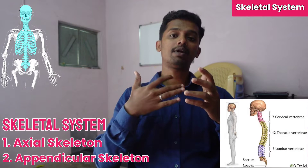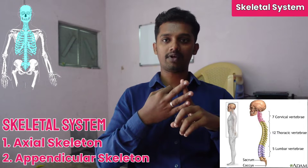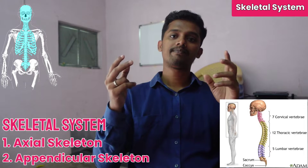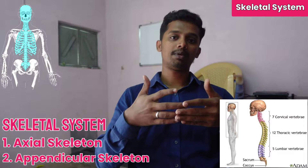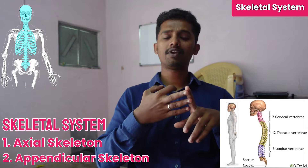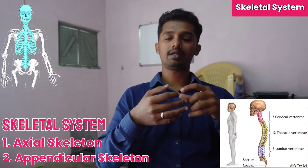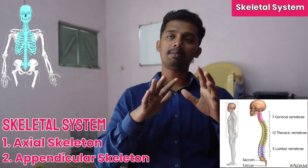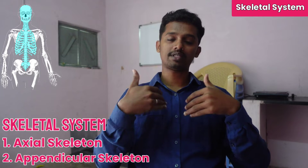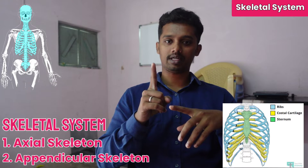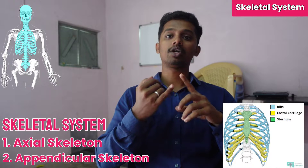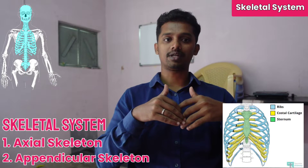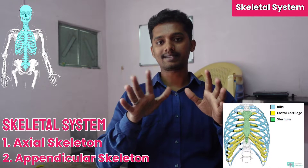Next, we have the vertebrae, which are divided into four regions: cervical vertebrae, thoracic vertebrae, lumbar vertebrae, and sacrum-coccyx (which are fused bones). The lumbar vertebrae are in the stomach region, the thoracic vertebrae cover the chest region, and the cervical vertebrae are in the neck. Then there is the thoracic cage: the ribcage has 12 pairs — 24 ribs — plus 1 sternum bone, covering the thoracic region. Overall, this covers all axial skeleton bones: skull, vertebrae, and thorax.